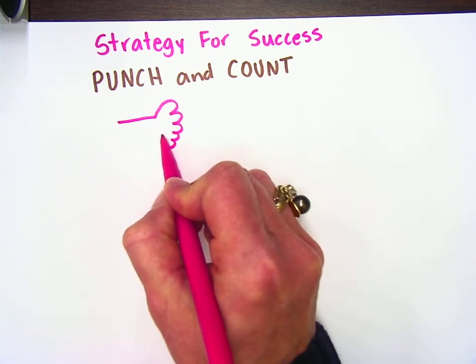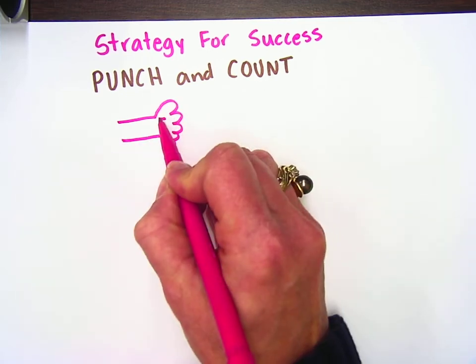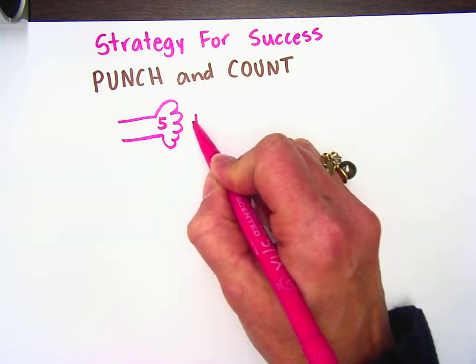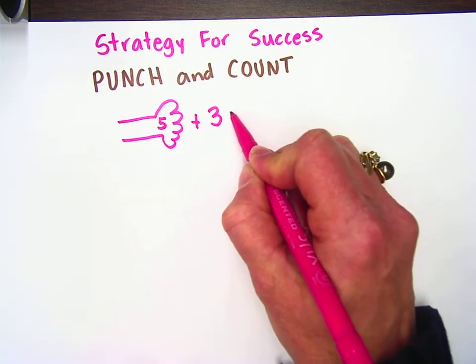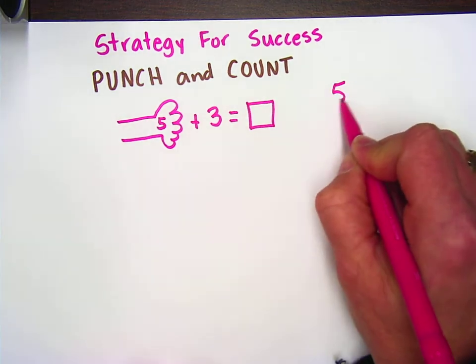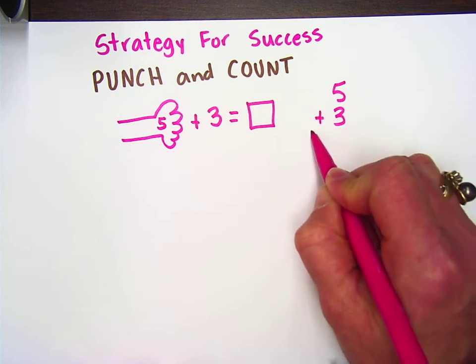I'm going to say, there's a nice little hand, I'm going to call this my fist, and I'm going to be punching the number five and then counting on three more to get my answer. Now, you might see this in a math problem that looks like this, five plus three.